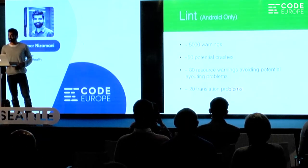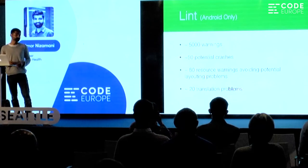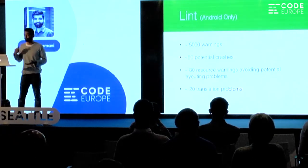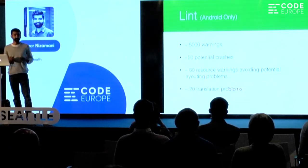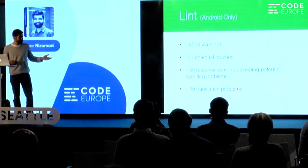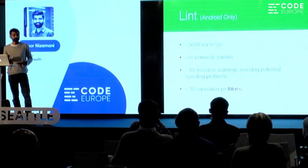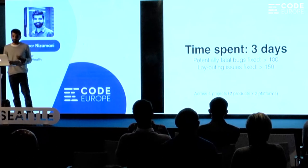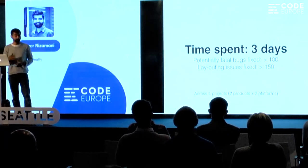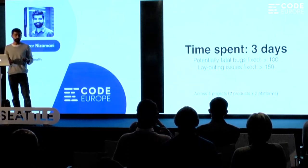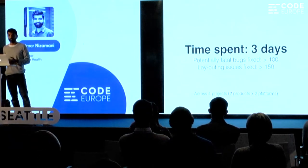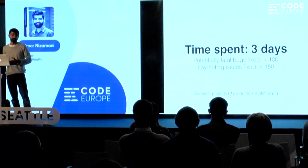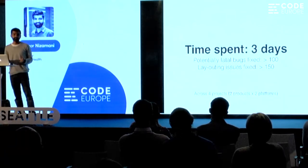When we ran Lint on our code base we found 5,000 warnings — a huge number, an overflow in the entire console. No one wanted to look at it. But there are potential crashes that happen because of these issues. So I went through all the fatal and critical conditions that would have caused our app to crash, and translation problems and resource problems, and stabilized the code step-by-step. The result of static analysis was spending three days — one day running it, setting it up in Docker, and running it on all four projects. We managed to fix over 100 potentially fatal crashes in three days, and 150 layouting issues unknown to the QA or product team.